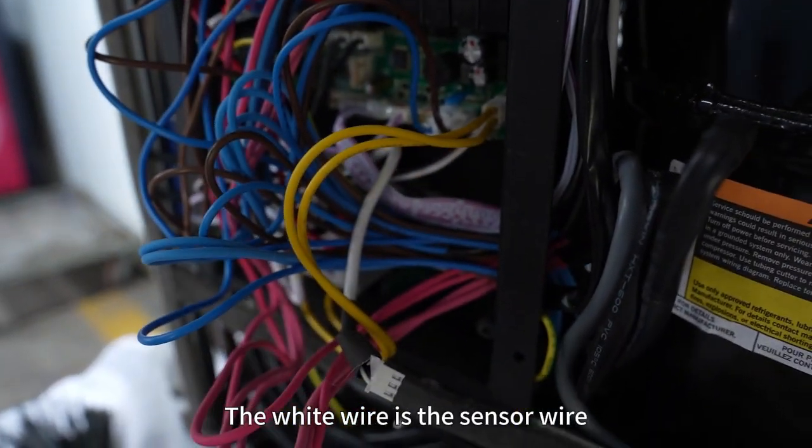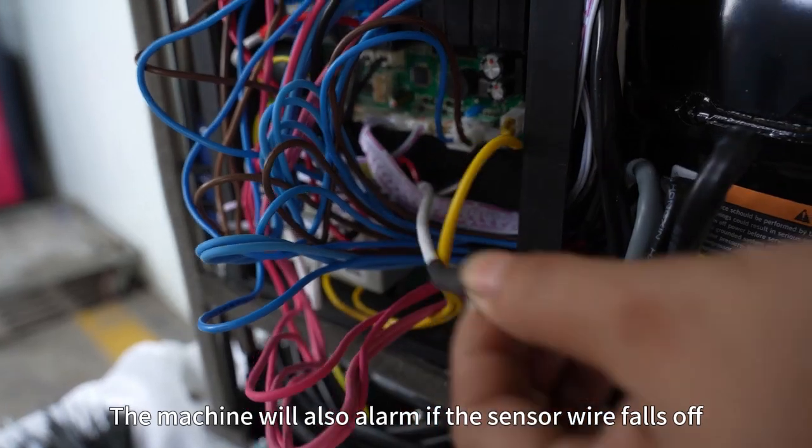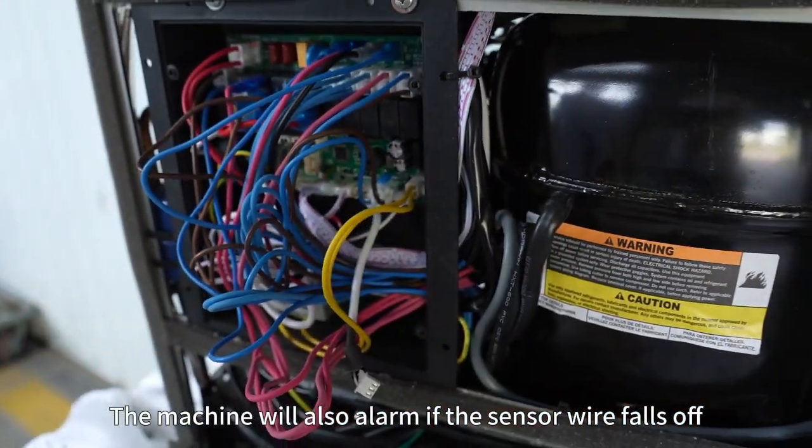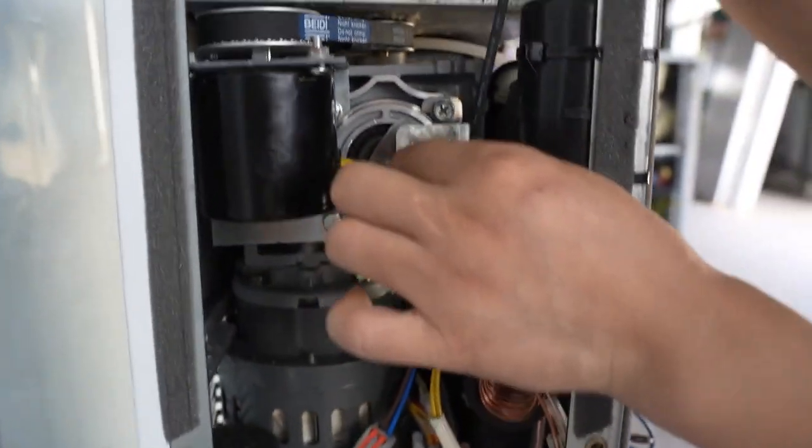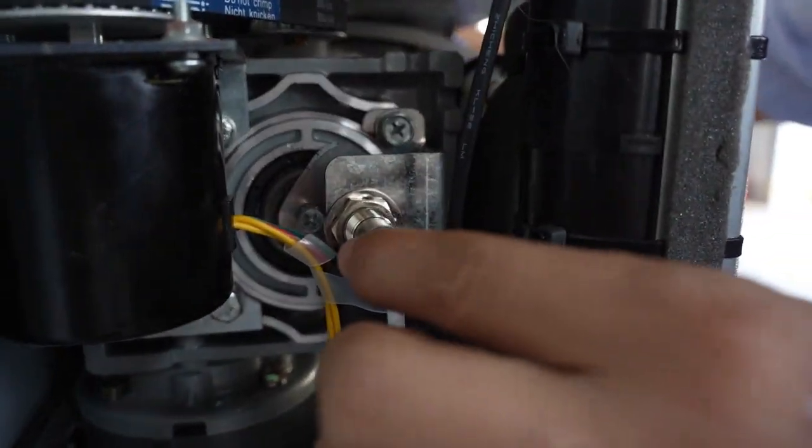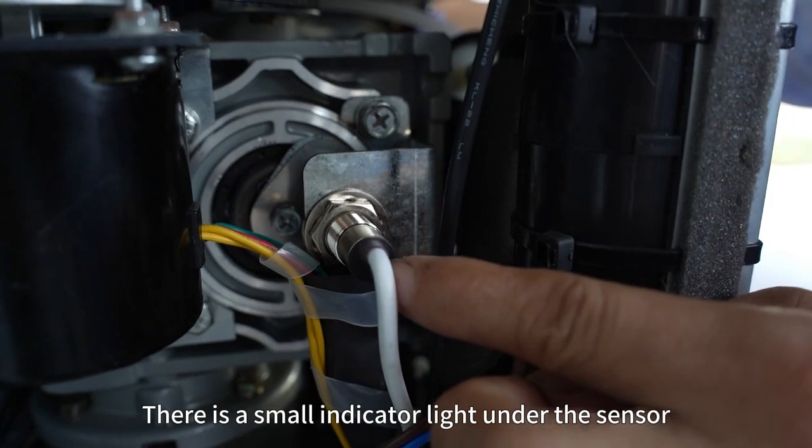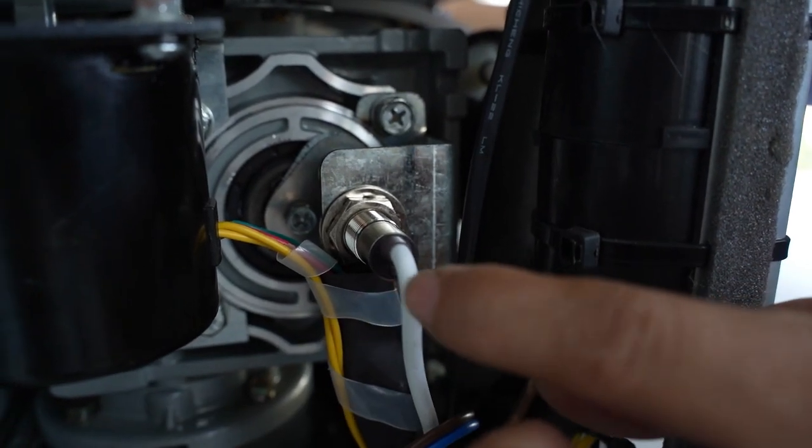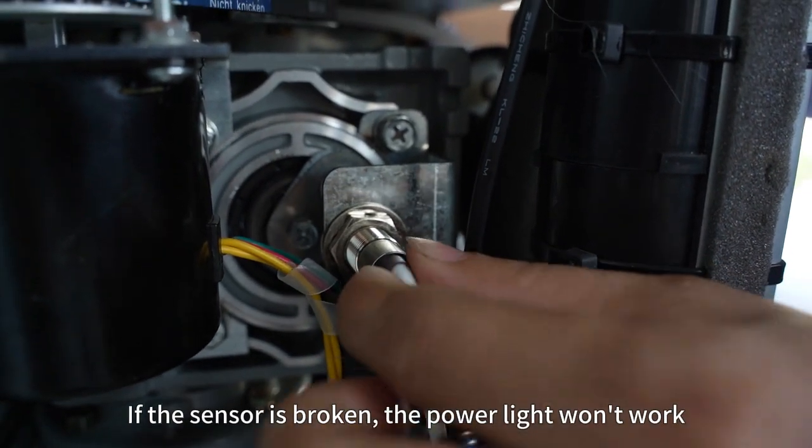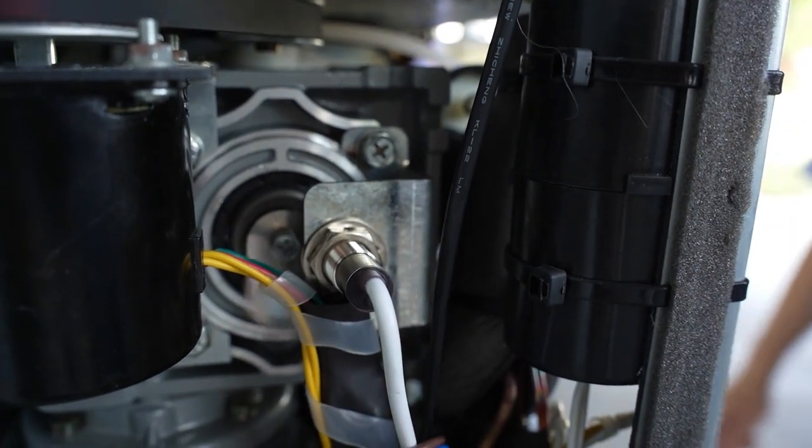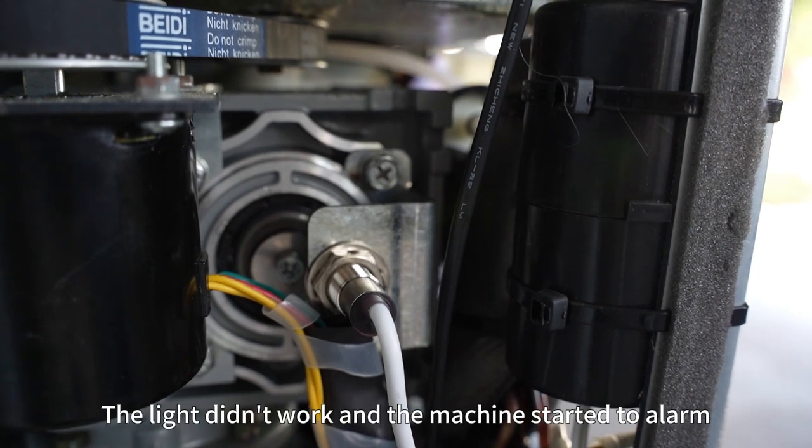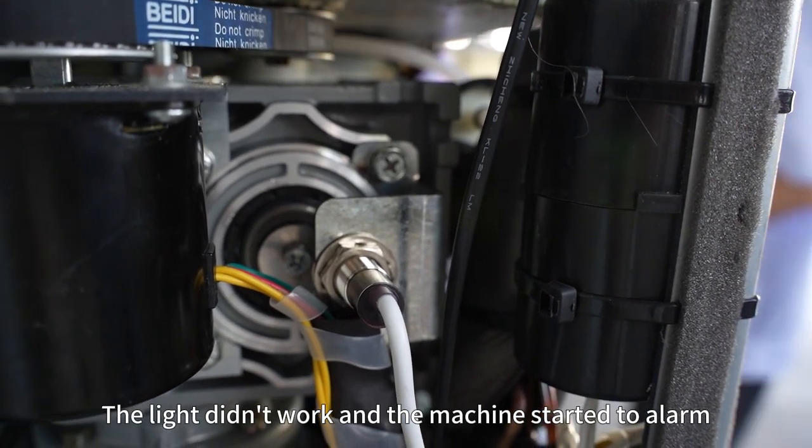The white wire is the sensor wire. The machine will also alarm if the sensor wire falls off. When powered on, there is a small indicator light under the sensor. If the sensor is broken, the power light won't work. Now start the machine - the light didn't work and the machine started to alarm.